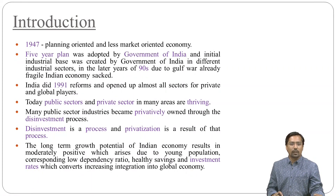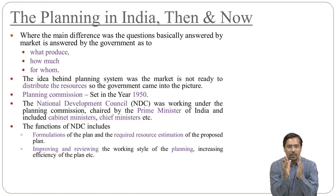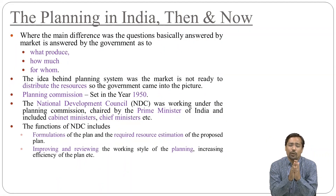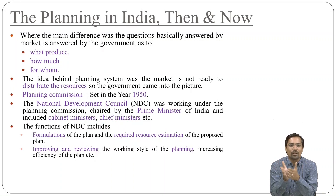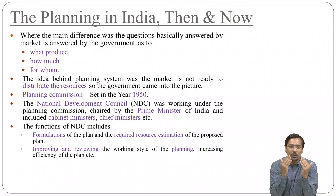Let us talk about the various planning commissions. In 1947, after independence, the biggest question was how to develop and grow. The basic questions were: what do we need to produce, how much quantity do we need to produce, and for whom are we going to produce? The idea behind the planning system was that the market is not ready to distribute resources, so the government came into the picture. The planning commission was set up in 1950, and we were highly inspired by the Russian economy as well — from socialism and social welfare.